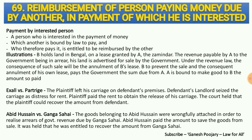B made the payment because he was the interested party who would face the impact of disconnection. So the liability comes back on Mr. A, and A must repay the amount paid by B — that is what section 69 discusses. Two relevant case laws are Excel v Partridge, which aligns with this illustration, and Abid Hussein v Ganga Sahi. Quoting these two case laws is sufficient for section 69 in exams.